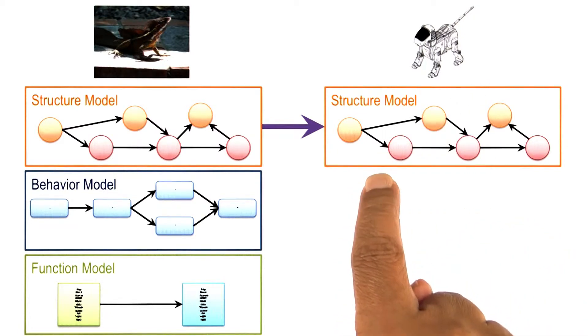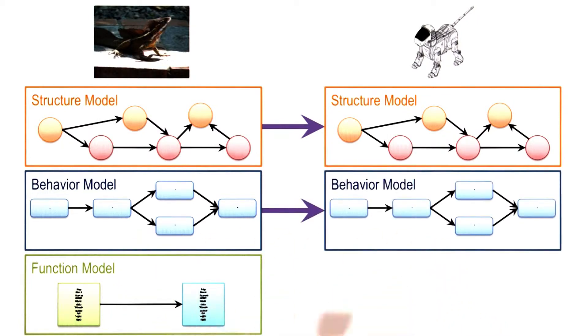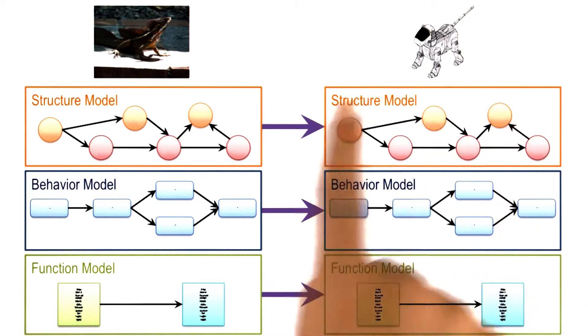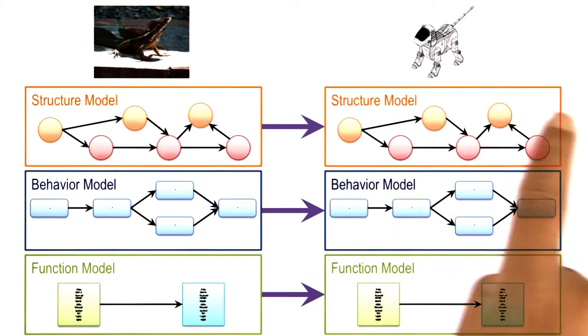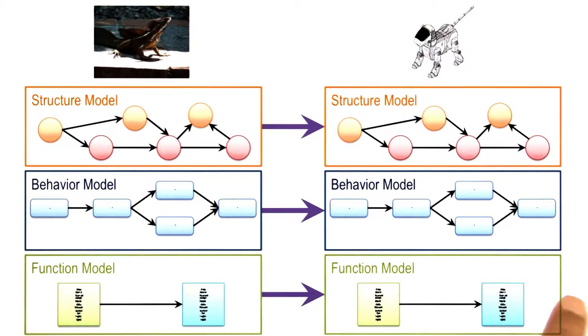Having constructed a structural model for this robot that can walk on water, then we can try to transfer the behavioral model, and then the functional model. And in this way we have a complete model of a robot that can walk on water, along with an explanation of how it will achieve its function.